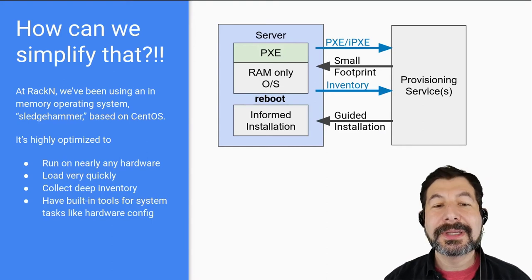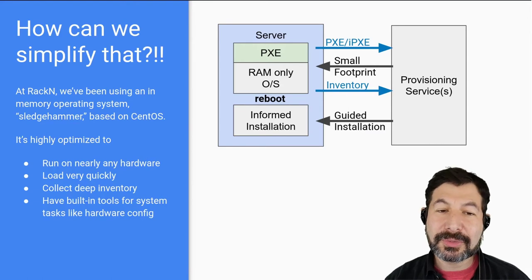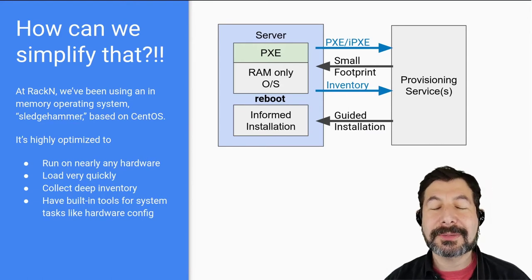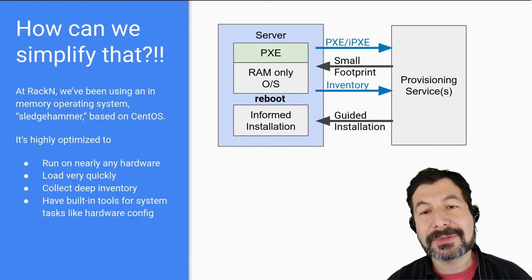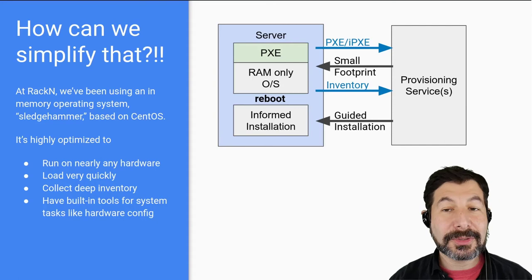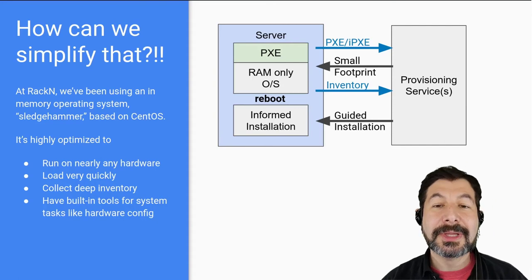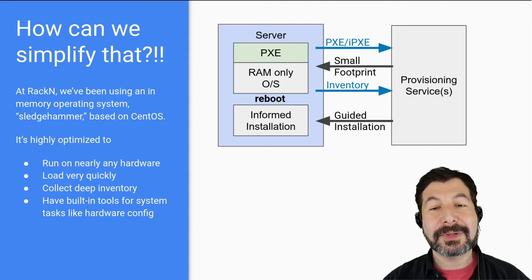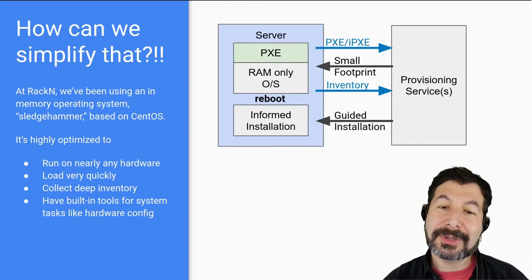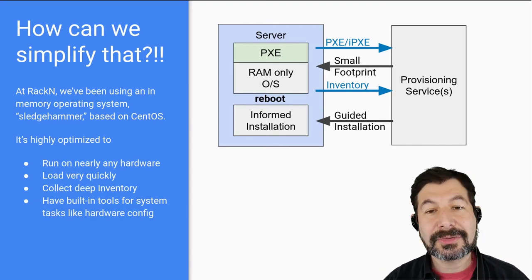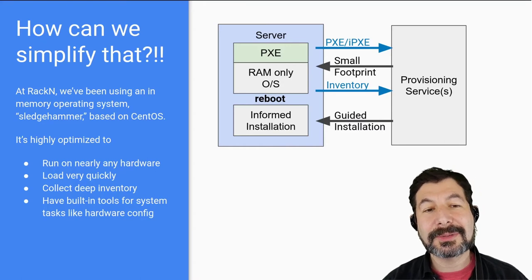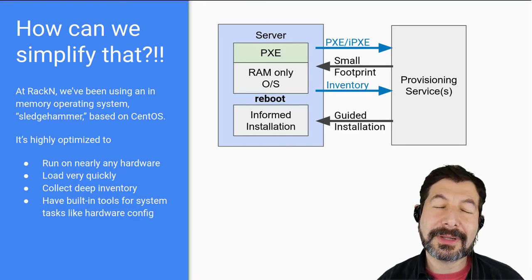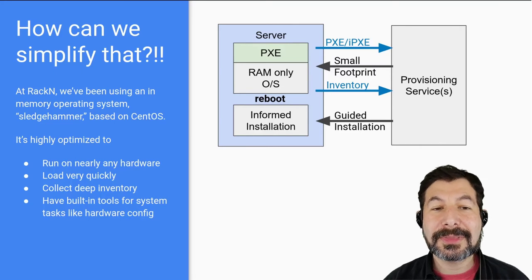It boots quickly, it runs on everything, and it collects deep inventory because it has all the tooling you want. We use it for RAID and BIOS configuration, scrubbing systems, validating systems. It's a full OS and we have full control, which makes it really powerful. Once it's completely set, we can start our guided installation. And because it's running on the system itself, it's incredibly easy to parallelize — we can do thousands of machines in parallel.